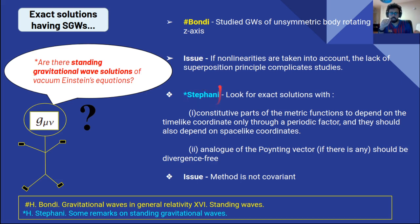Then almost a decade ago it was Hans Stefani who postulated this question: are there standing gravitational wave solutions of the vacuum Einstein equations? His idea was that you look for exact solutions with specific form of the metric where the consecutive part should have a periodic factor or there might be an analog of Poynting vector. But the issue was that such a method was not covariant.